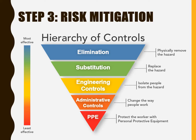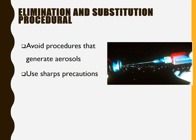Step 3 of risk assessment is risk mitigation — after identification of hazards and their evaluation. Mitigation means reducing the severity. The hierarchy of controls listed from most effective to least are: first, elimination — physically removing the hazard; next, substitution — replacing the hazard with a non-hazardous substitute; third, engineering controls — structurally separating the hazard from people; administrative controls — changing the way of working; and last, personal protective equipment. For elimination and substitution, avoid procedures that generate aerosols as much as possible and use sharps precautions.